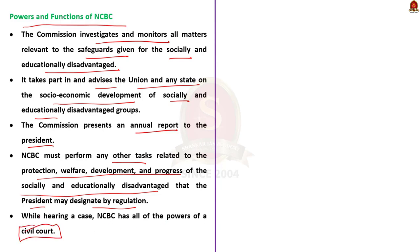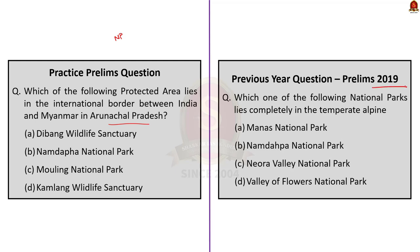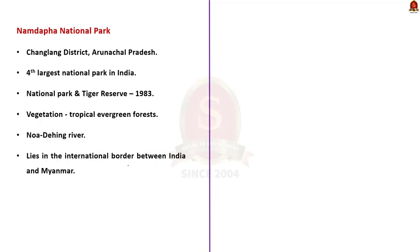The NCBC functions under the Ministry of Social Justice and Empowerment. Its composition includes a chairperson, vice-chairperson and three other members nominated by the president. The commission investigates and monitors all matters relevant to safeguards for the socially and educationally disadvantaged, advises the union and states on their socio-economic development, presents an annual report to the president, and must perform any other tasks the president designates. While hearing a case, NCBC has all powers of a civil court.